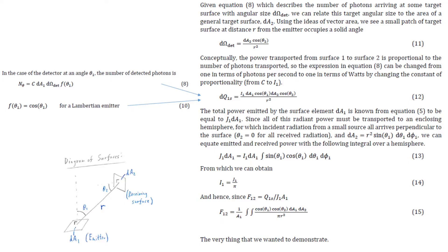The power transported from surface 1 to surface 2 is proportional to the number of photons transported. Taking equation 8 and changing from photons per second to watts by replacing constant C with I1 for the emitting surface 1, we get equation 12. The small amount of power transported from the emitter 1 surface area element to the target S is: I1 · dA1 · cos(θ1) · dA2 · cos(θ2) / r².